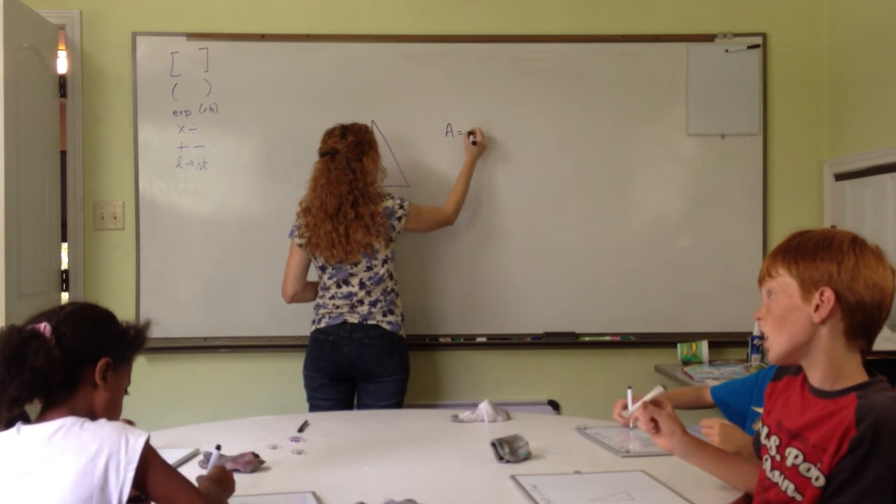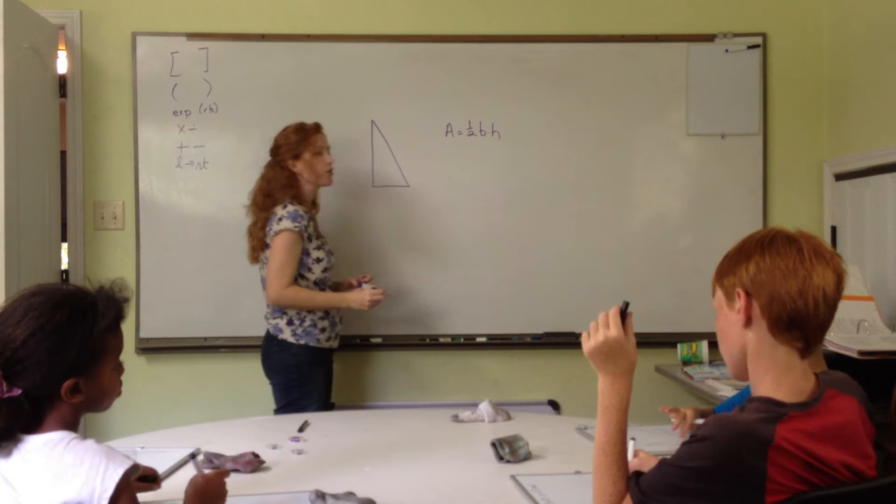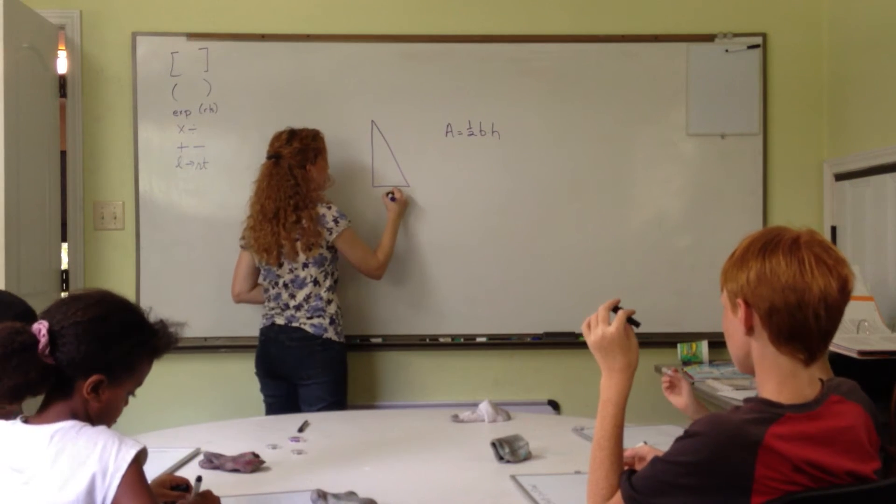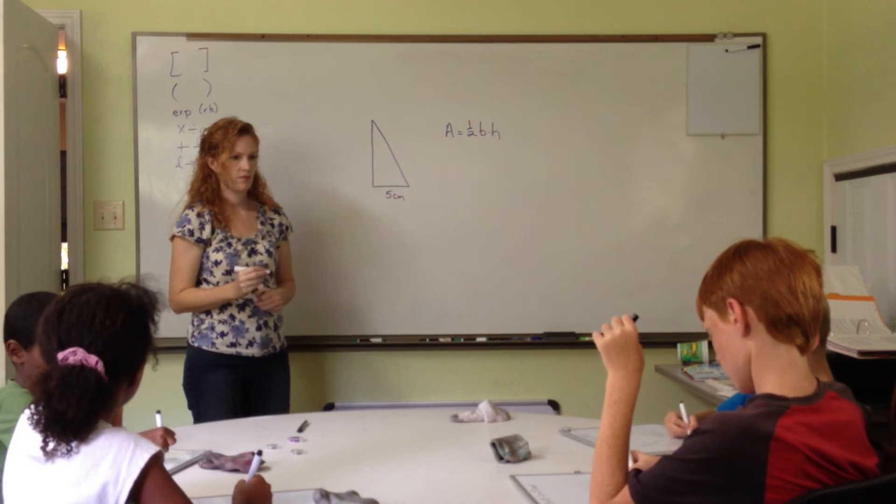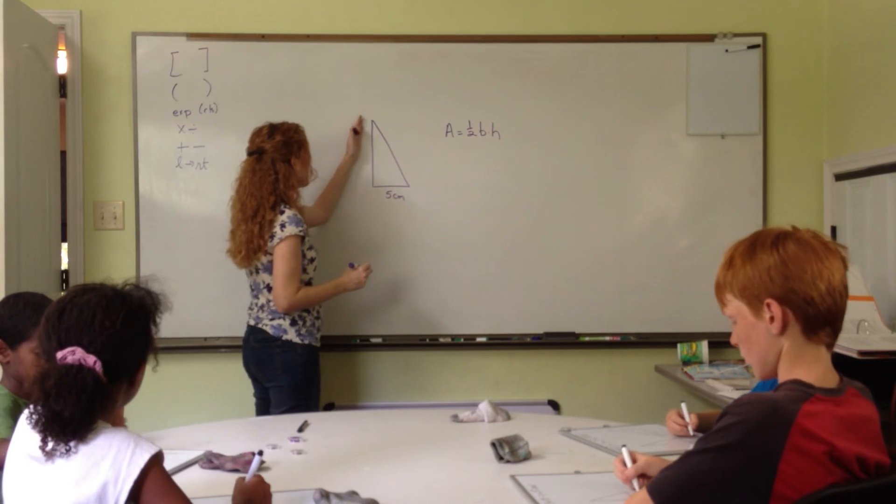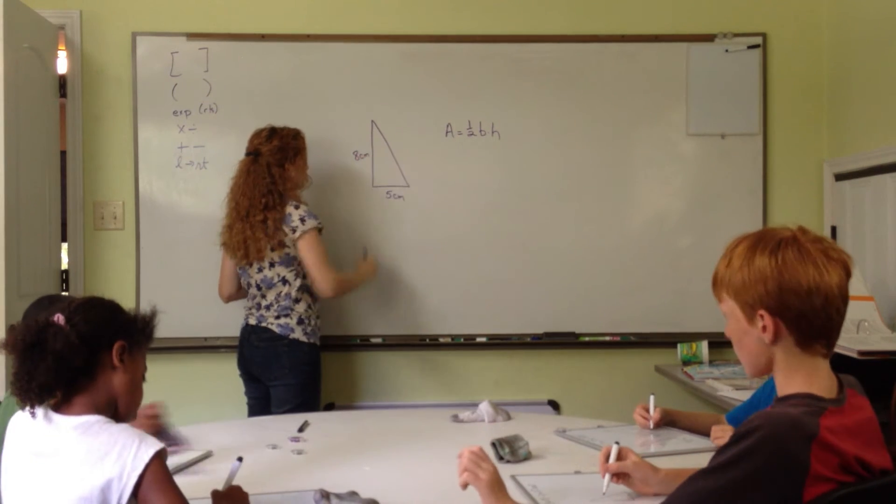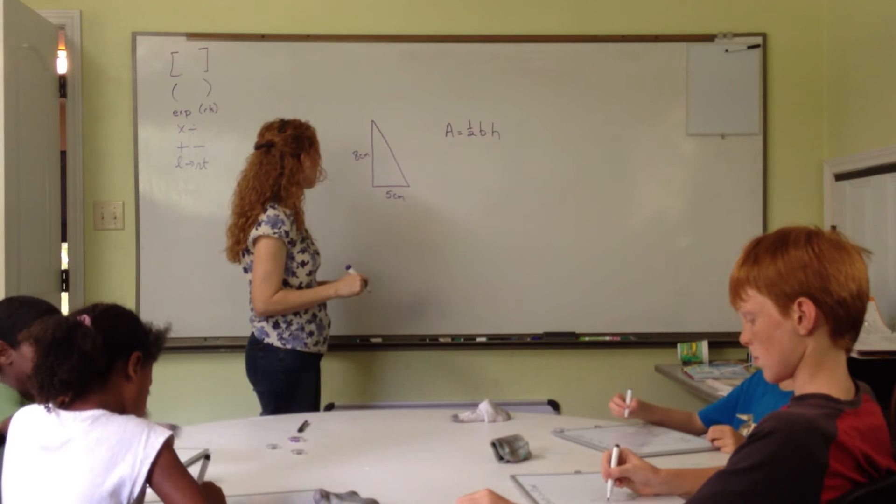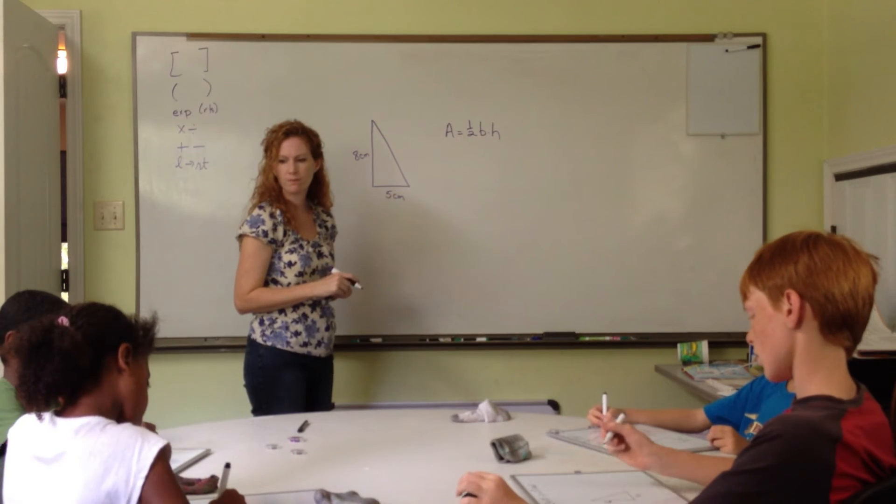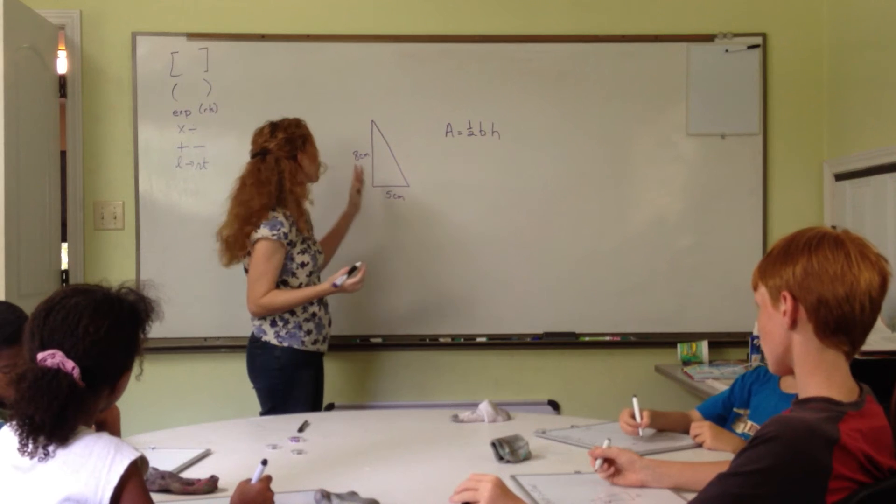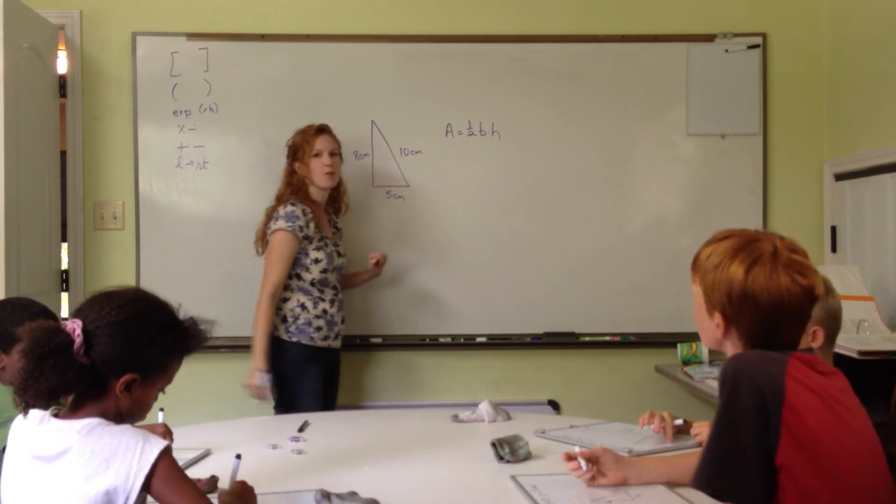Anybody know what the area of a triangle is? The area of a triangle is one half base times height. One half base times height. So, I want you to label your triangle with a base of 5 centimeters. And I want you to label this leg right here. I want you to label it 8 centimeters. Just do the best you can. And we're just making up numbers. So, I hear we're going to put in a number that's going to be easy. And I realize this is not actually according to Pythagorean theorem. So, we'll just, it'll be okay.